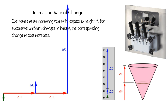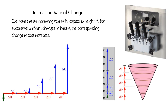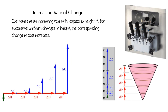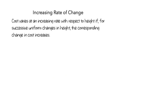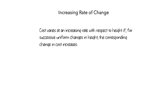Let's see what would happen if we split the added height into five sections. Now we've split the amount of change in height into five uniform sections, and you can see that the amount of change in cost is small for the first and then increases for each successive change in height. So this is what it means to have an increasing rate of change.